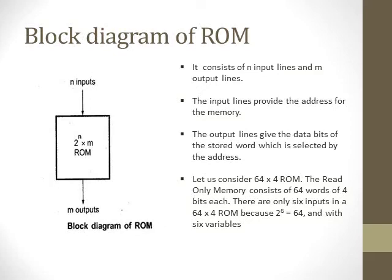This is the block diagram of ROM. In the block diagram you can see clearly there are N input and M output lines. Input lines provide the address for the memory, and the output line gives the data of the stored word selected by the address. For example, if a 64 by 4 ROM is there, then it consists of 64 words of 4 bits each. There are only 6 inputs because 2 raised to 6 is equal to 64.